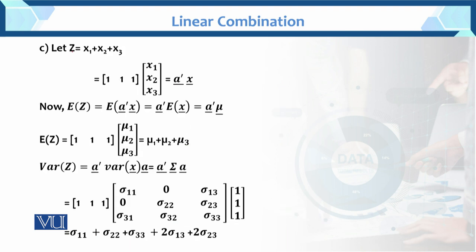For part c: z = x1 + x2 + x3. Now we have three random variables all with coefficient 1. So a = [1, 1, 1], and z = a-transpose x. Taking expectation on both sides: E[z] = a-transpose mu = 1*mu1 + 1*mu2 + 1*mu3.